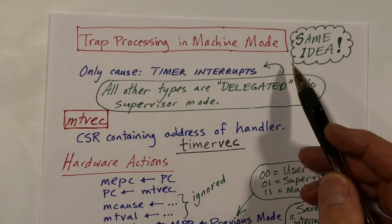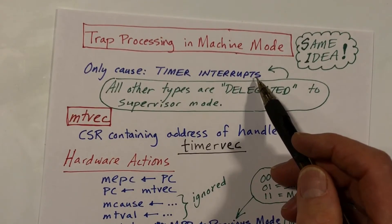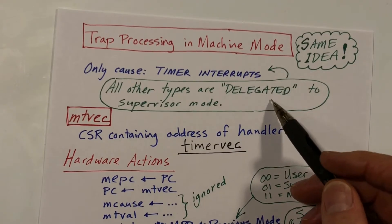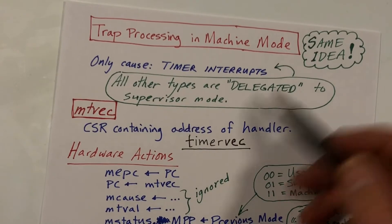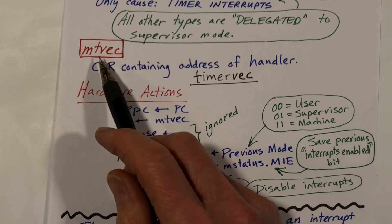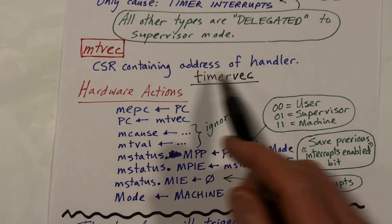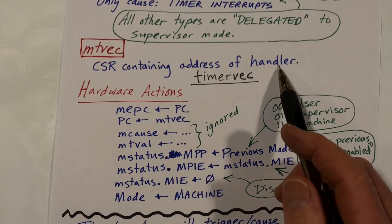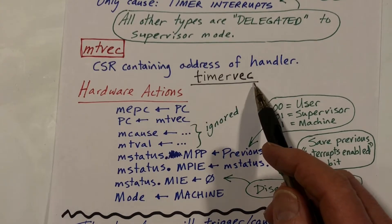Trap processing at machine mode happens pretty much the same way — exactly the same idea. The only cause of interrupts at machine mode is timer interrupts; every other interrupt is delegated at the hardware level immediately to supervisor mode. Like the stvec register, there's also an mtvec register containing the address of the machine mode trap handler. In XV6, that code is a function called timervec, which handles the timer interrupts.